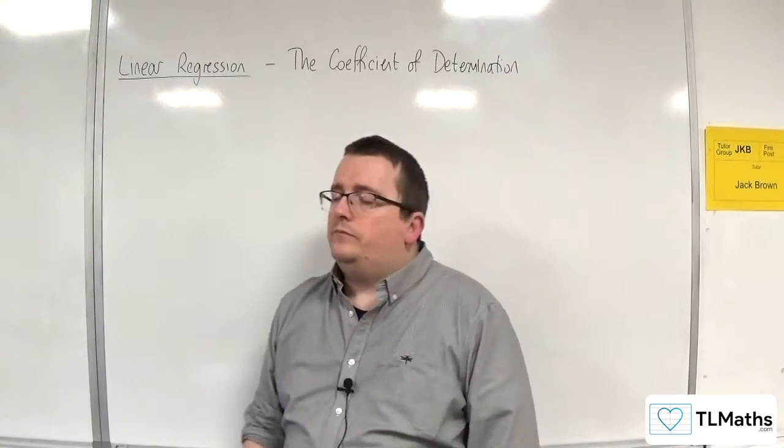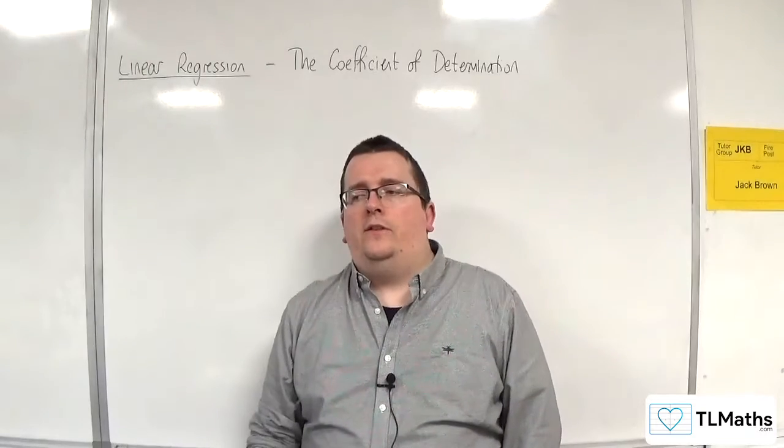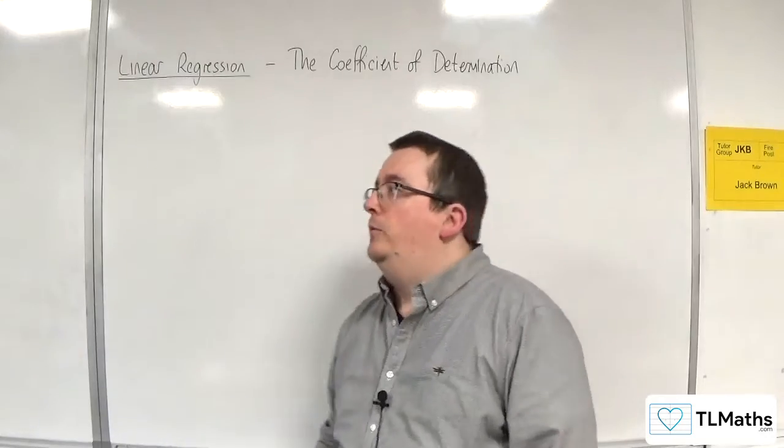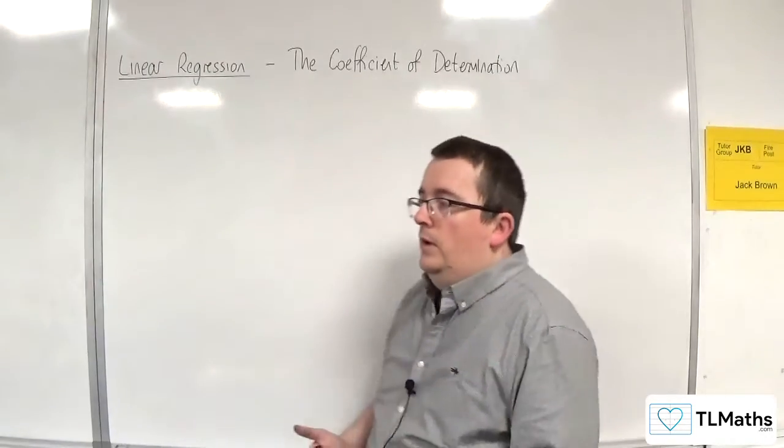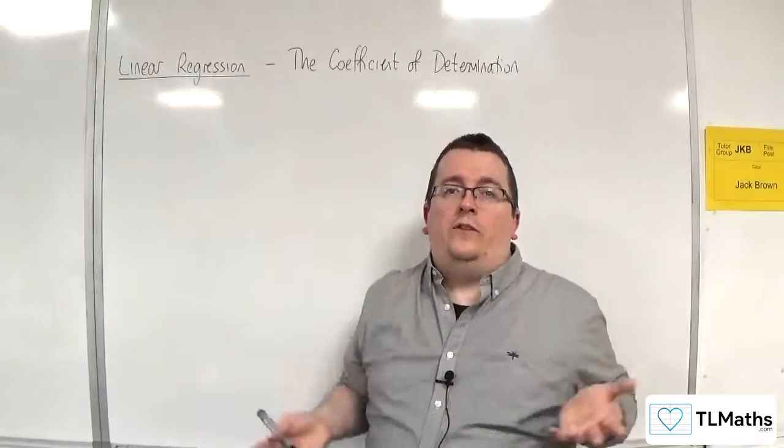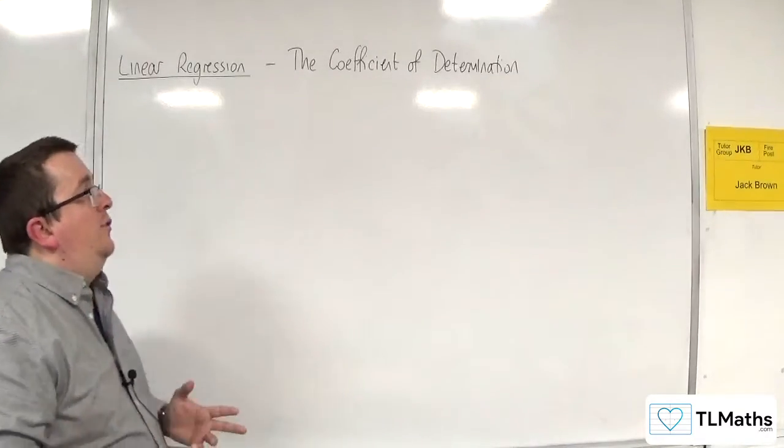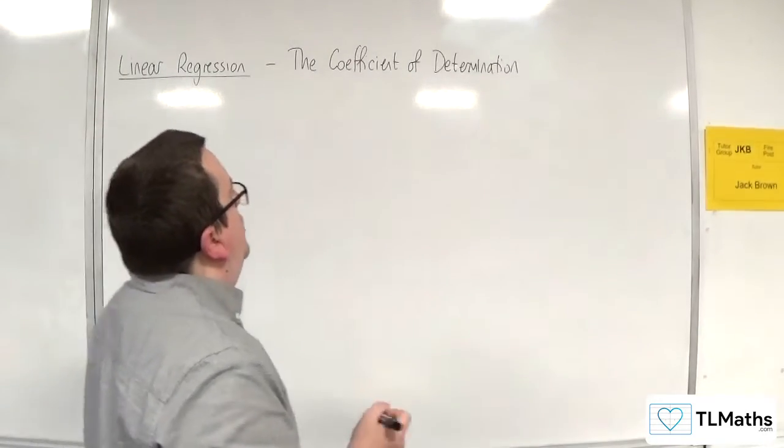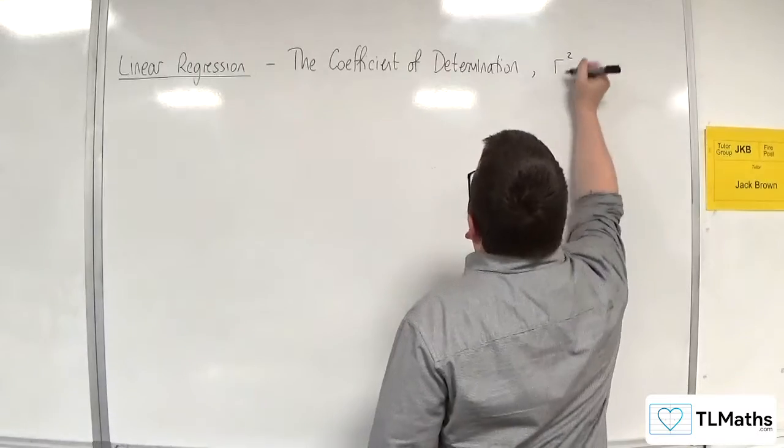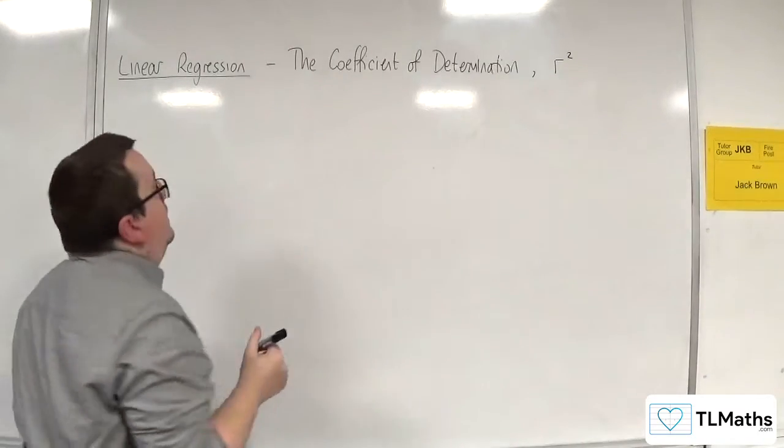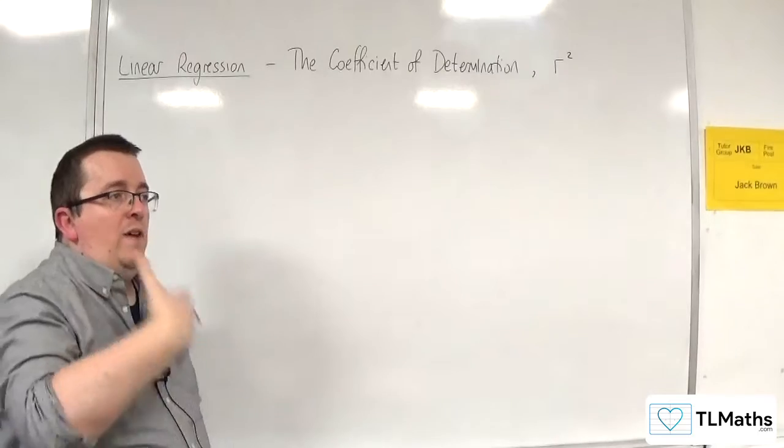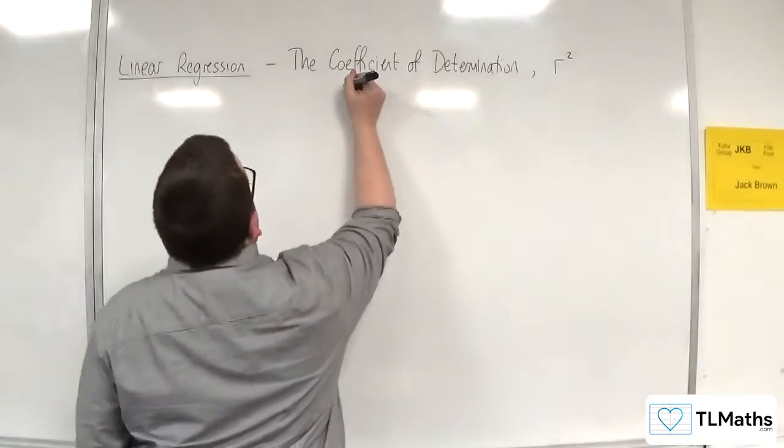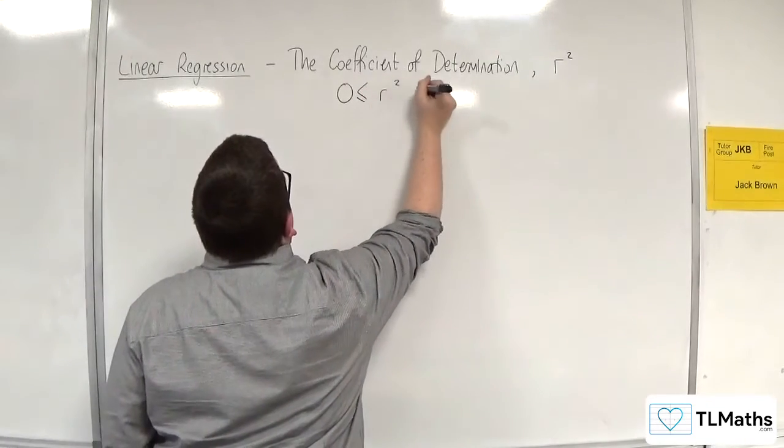That is one way of doing it. Another way is to consider the coefficient of determination. The coefficient of determination, as a calculation, is the square of the product moment correlation coefficient. So the coefficient of determination is r squared. And consequently, because the value of r goes between minus 1 and 1, the coefficient of determination goes between 0 and 1.